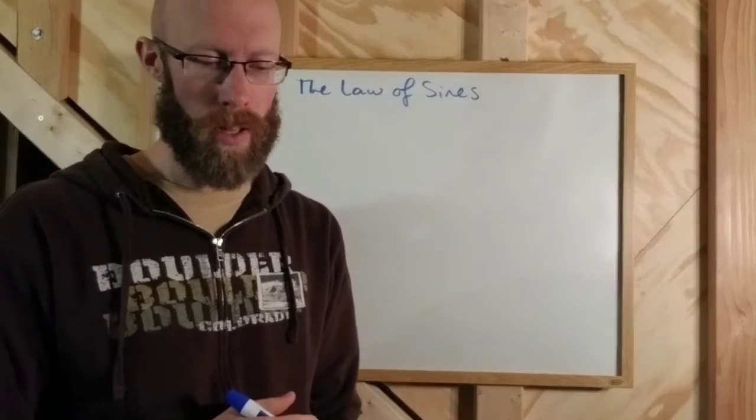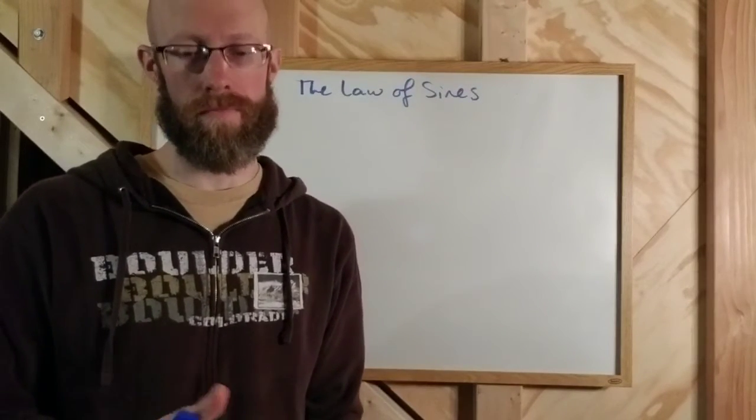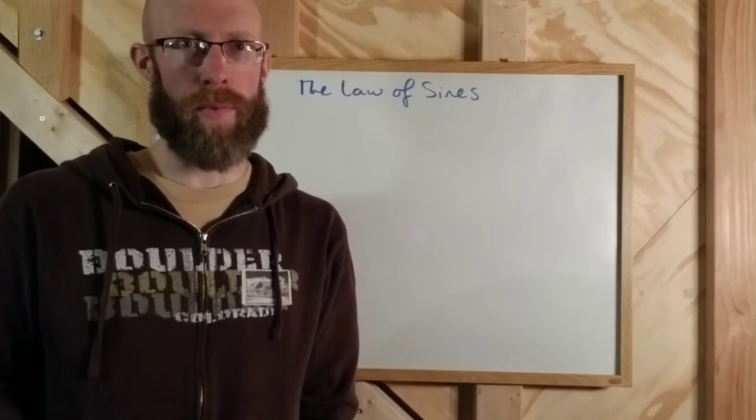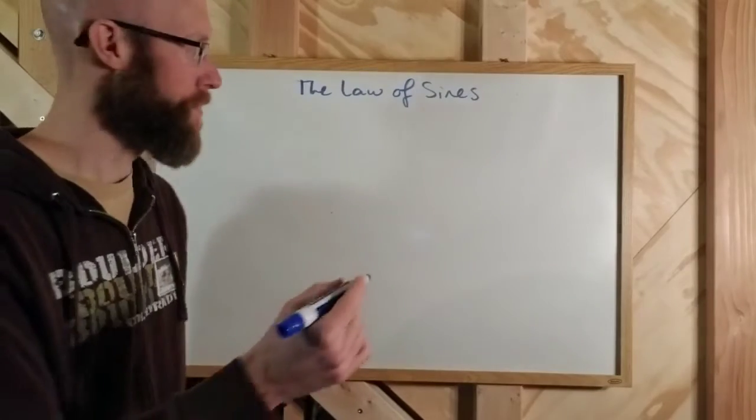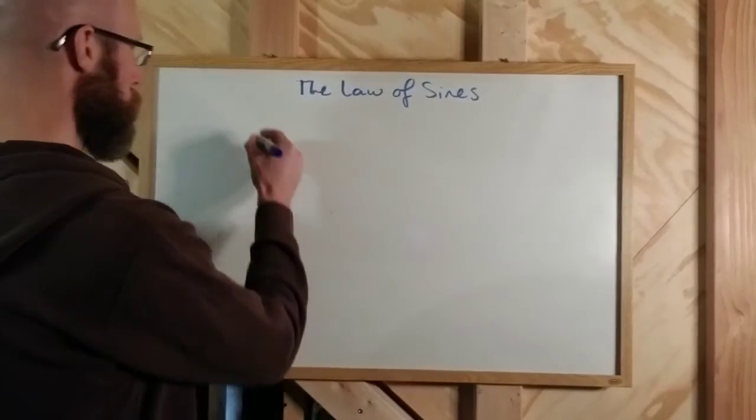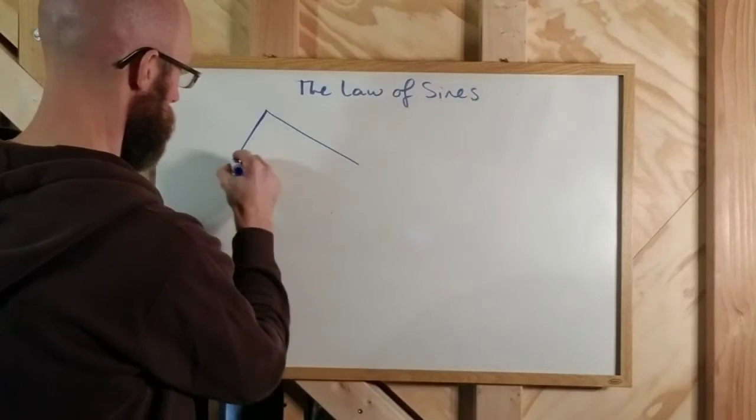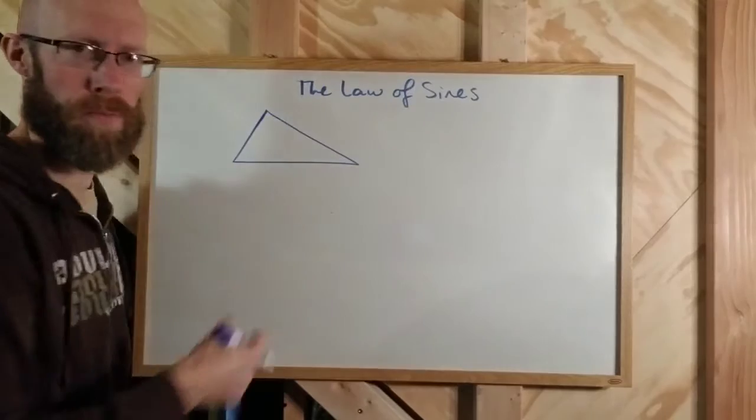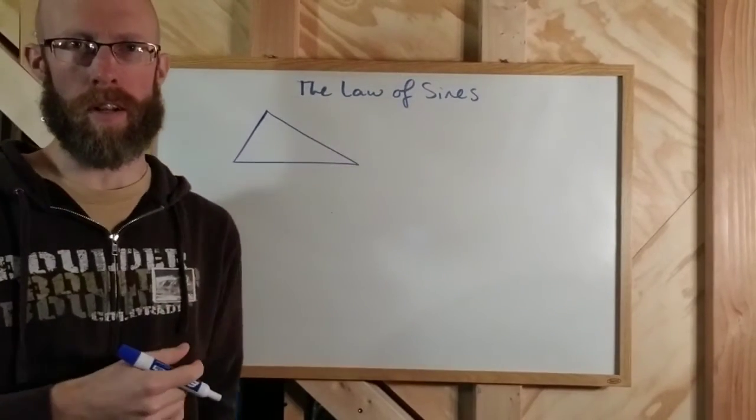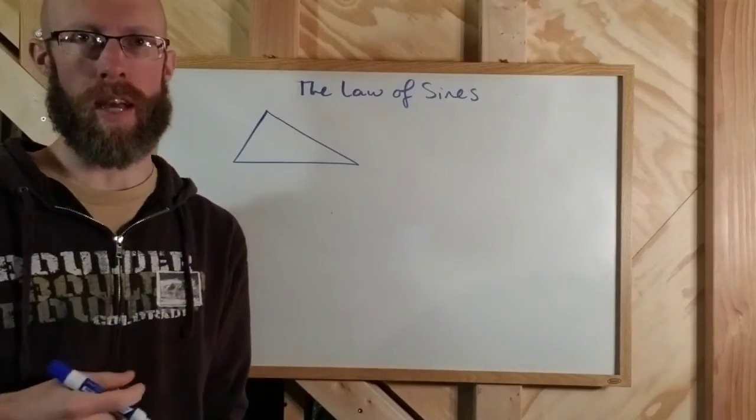We're going to start off with oblique triangles, just anything that's not a right triangle. And so, I'll just draw a quick one up here, just some sort of triangle. I'll make this maybe an acute triangle, meaning all three angles are acute.